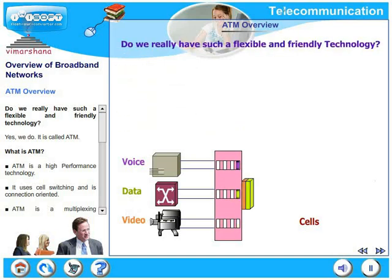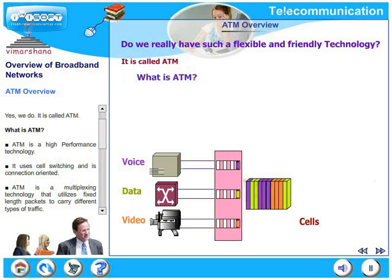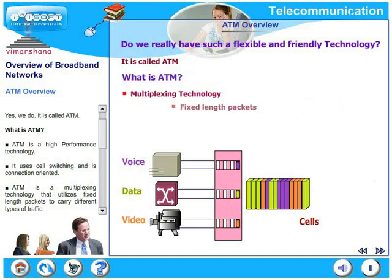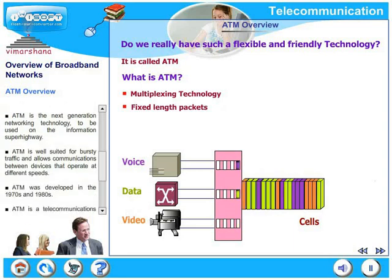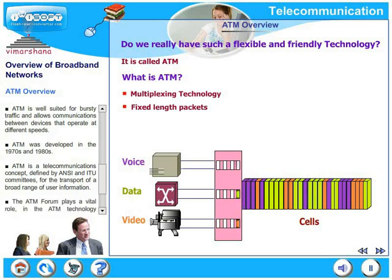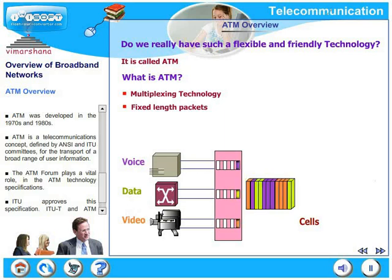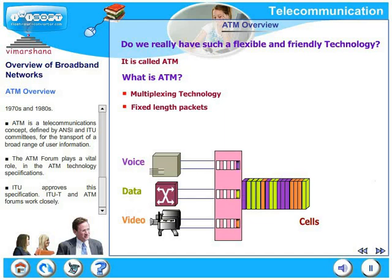Do we really have such a flexible and friendly technology? Of course, yes, we do. And this is called ATM. ATM is a high performance technology. It uses cell switching and it is connection oriented. ATM is a multiplexing technology that utilizes fixed link packets to carry different types of traffic. ATM is a next generation networking technology to be used on the information superhighway. ATM is well suited for bursty traffic and allows communications between devices that operate at different speeds. ATM was developed in the 1970s and 1980s. It is a telecommunications concept defined by ANSI and ITU committees for the transport of a broad range of user information. The ATM Forum plays a vital role in ATM technology specifications. ITU approves these specifications, and ITUT and ATM Forum work closely on this.